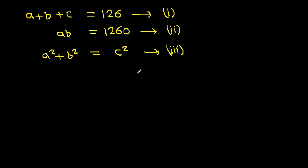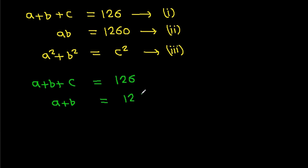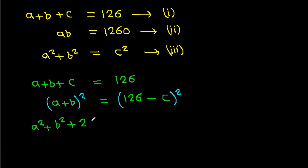From equation 1, we have A plus B plus C equals 126, so A plus B equals 126 minus C. If we square both sides, it will be A squared plus B squared plus 2AB equals (126 minus C) squared.